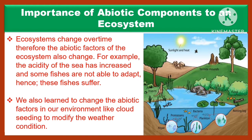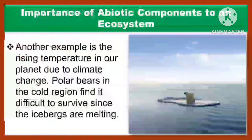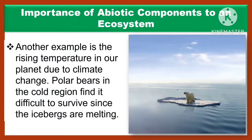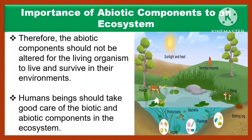We have also learned to change the abiotic factors in our environment, like cloud seeding, to modify the weather condition. Another example is the rising temperature in our planet due to climate change. Polar bears in the cold region find it difficult to survive since the icebergs are melting. Therefore, the abiotic components should not be altered for the living organisms to live and survive in their environments. Human beings should take good care of the biotic and the abiotic components in the ecosystem.